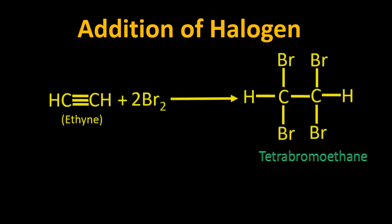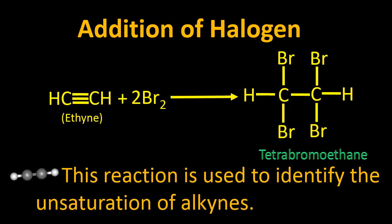In this reaction, acetylene reacts with bromine water. The bonds between the carbon atoms break, freeing electrons on both carbon atoms. These electrons form bonds with bromine, converting the compound into tetrabromoethane. The prefix 'tetra' represents four bromine atoms.